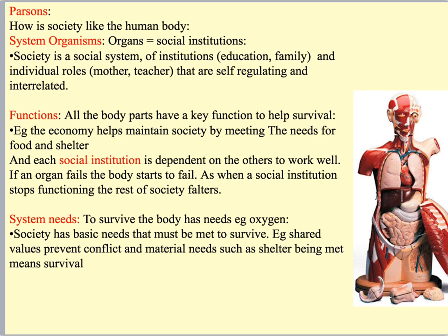And finally, he said society is just like the body because it has needs — system needs — like the way the body needs oxygen in order to survive, or water, or food. Society has needs as well. He was very big into shared values; he said that's a key need for society because it prevents conflict and helps everyone move in the same direction. We've also got material needs, such as shelter, like housing. These are all things that are very important for society to survive.